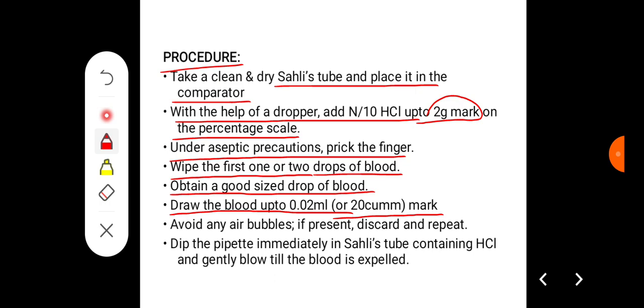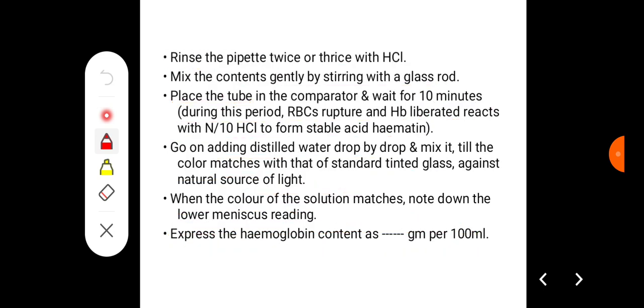Draw the blood up to the mark of 0.02 ml, that is 20 cubic millimeter mark, in the hemoglobin pipette. Avoid any air bubbles; if present, discard and repeat the procedure. Dip the pipette immediately in Sahli tube containing HCl and gently blow till the blood is expelled. Then rinse the pipette twice or thrice in the HCl.